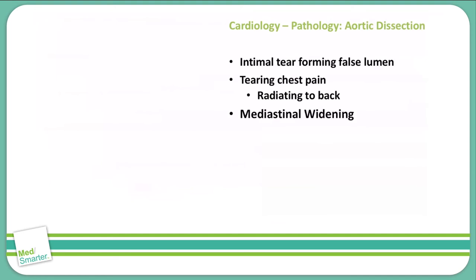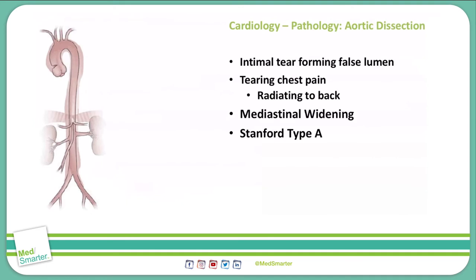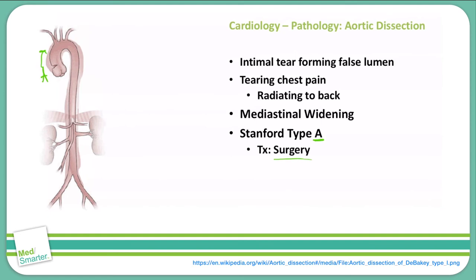There are two different types of aortic dissections. Stanford type A involves the ascending aorta, which moves upward in the chest, and can extend beyond the aortic arch into the descending aorta. This can result in aortic regurgitation back into the left ventricle as well as cardiac tamponade. The treatment for a Stanford type A aortic dissection is surgery, to correct the dissection and return normal blood flow to the upper extremities and all organs of the body.